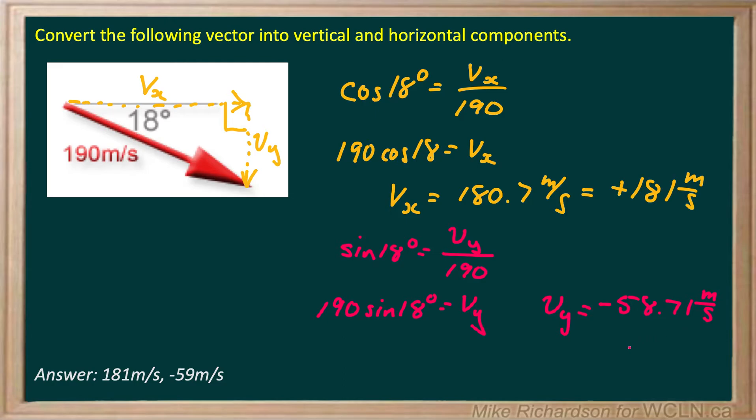So, don't forget components are still vectors. They still can be positive or negative. And rounding that off to just a couple of significant figures, I get negative 59 meters per second for my vertical component.